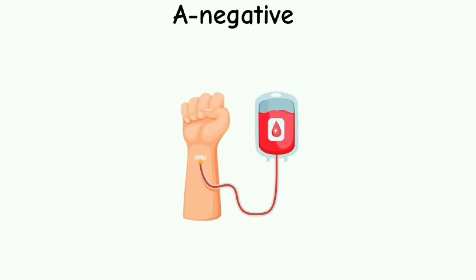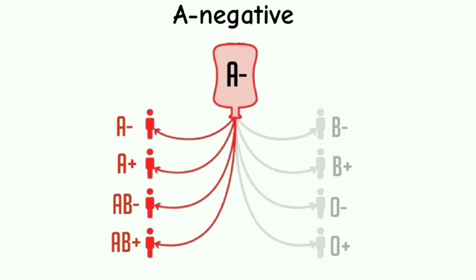Individuals with A negative blood can receive donations from A negative and O negative blood types, and they can donate to recipients with A negative, A positive, AB negative, and AB positive blood types.